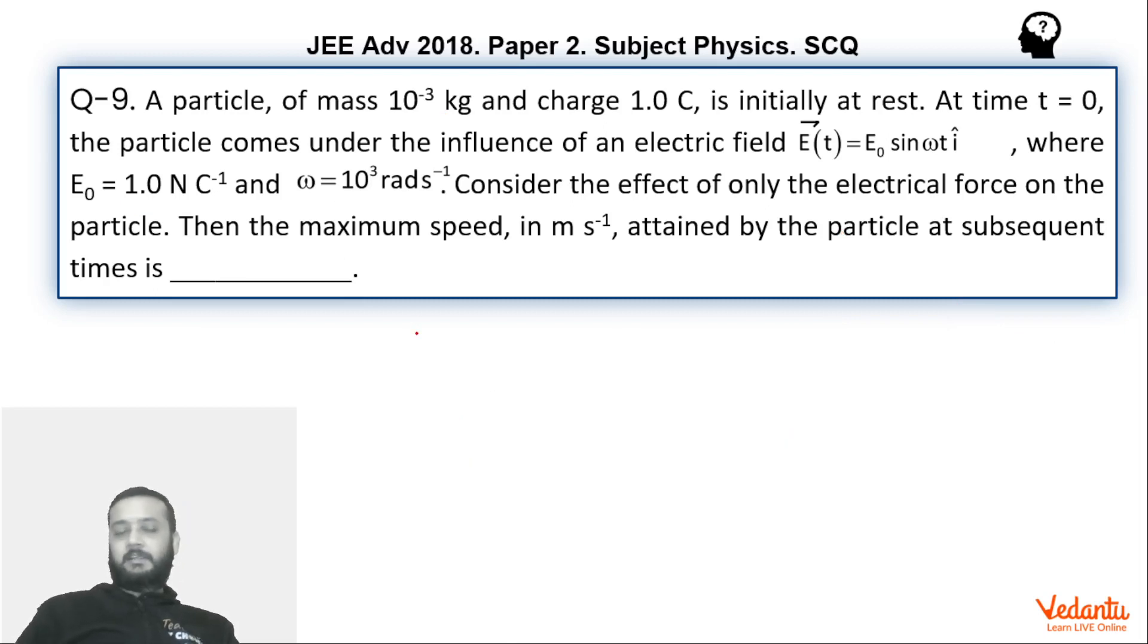So basically they thought that maximum force is M - maximum force can be written as M omega square a, because maximum acceleration in SHM is omega square a. So M omega square a is the maximum force we can say. So this will be equals to QE0, because maximum value of electric field is E0. So from here we can find the value of a. From here we can find the value of a, because m is given, omega is given, everything is given, the value of a we can find.